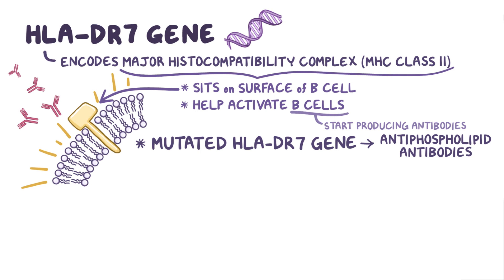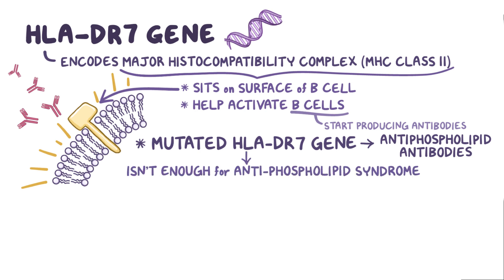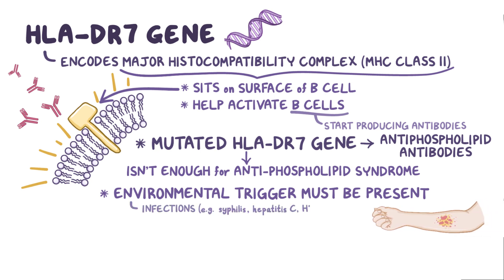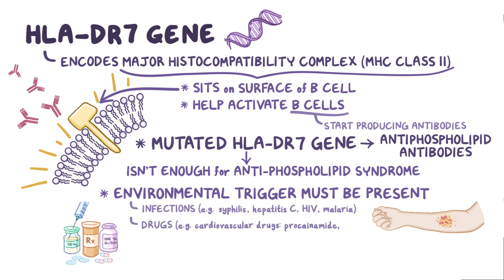But the presence of the mutated HLA-DR7 gene alone isn't enough to develop antiphospholipid syndrome — an environmental trigger must also be present. Some common ones include infections like syphilis, hepatitis C, HIV, and malaria. Drugs like some cardiovascular drugs including procainamide, quinidine, propranolol, and hydralazine, or antipsychotic drugs like phenytoin and chlorpromazine.